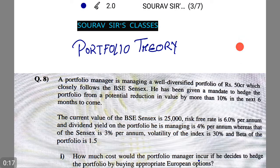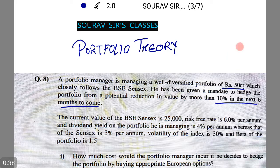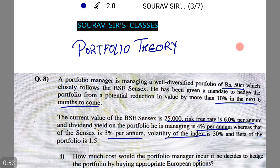A portfolio manager is managing a well-diversified portfolio of 50 crores which closely follows the BSE Sensex. He has been given a mandate to hedge the portfolio from a potential reduction in value by more than 10% in the next six months. The current value of the BSE Sensex is 25,000, risk-free rate is 6% per annum, dividend yield in the portfolio is 4% per annum, whereas that of the Sensex is 3% per annum, with a volatility index of 30% and beta of the portfolio as 1.5.